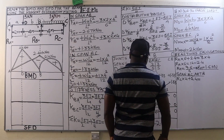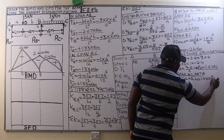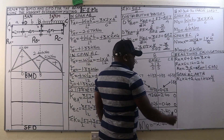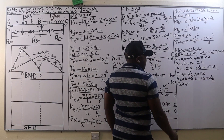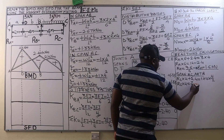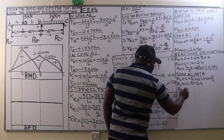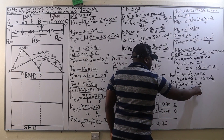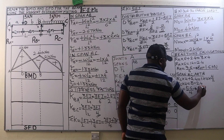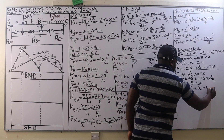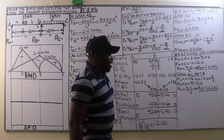Between C and B we have a UDL of 1 kilonewton per meter, converted to a point load by multiplying by the span of 4 meters, acting at the center. This gives RC times 4 equals 8 minus 2.4, so 5.6 divided by 4, giving a reaction at C of 1.4 kilonewtons.